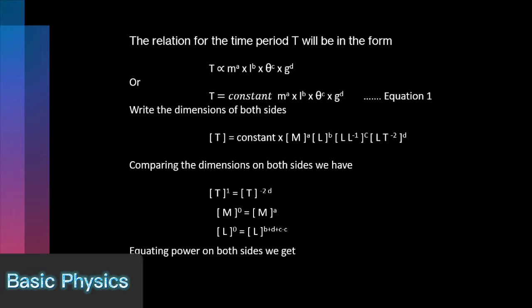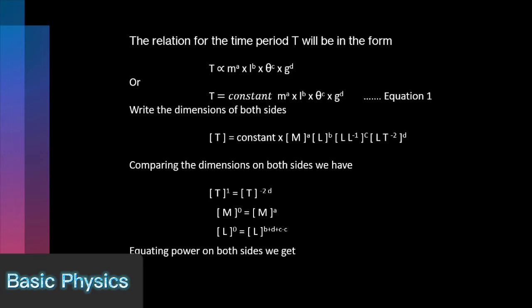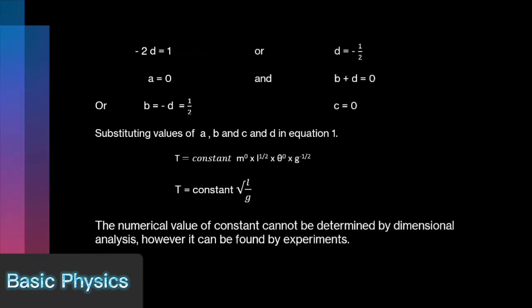Equating values to find value of a, b, c, d: -2d equal to 1, and d is equal to -1/2. A is equal to 0, c is equal to 0, and b is equal to 1/2.